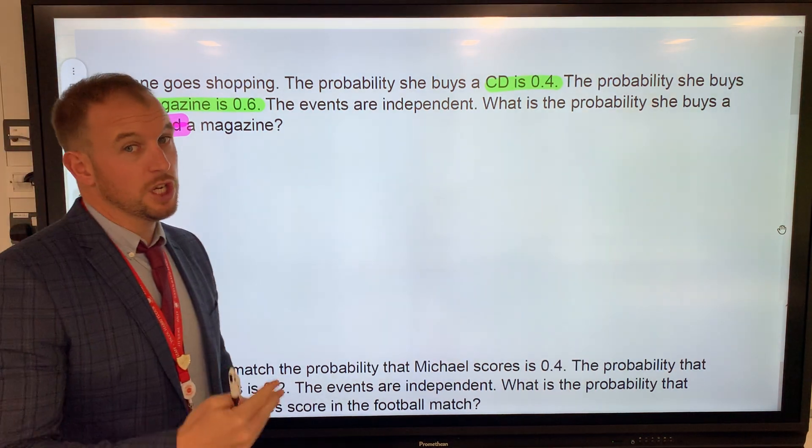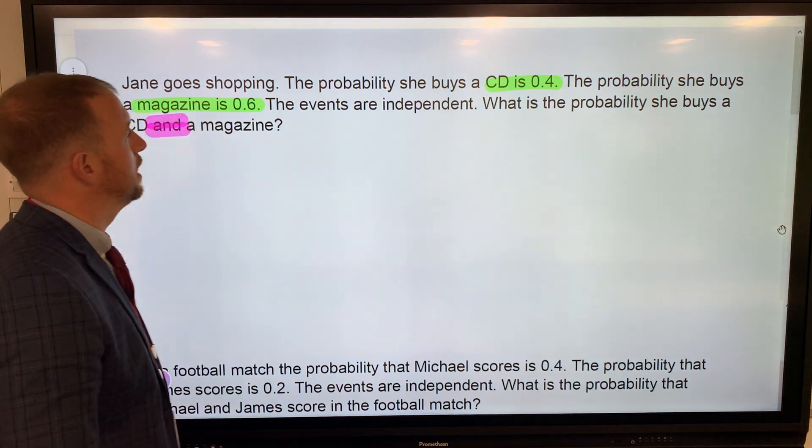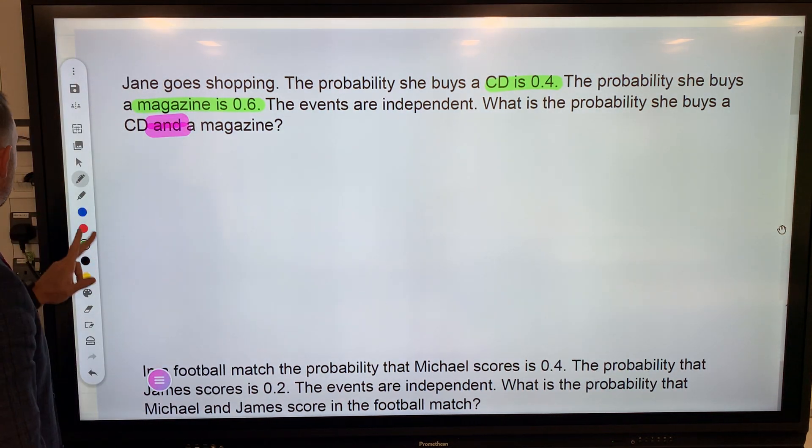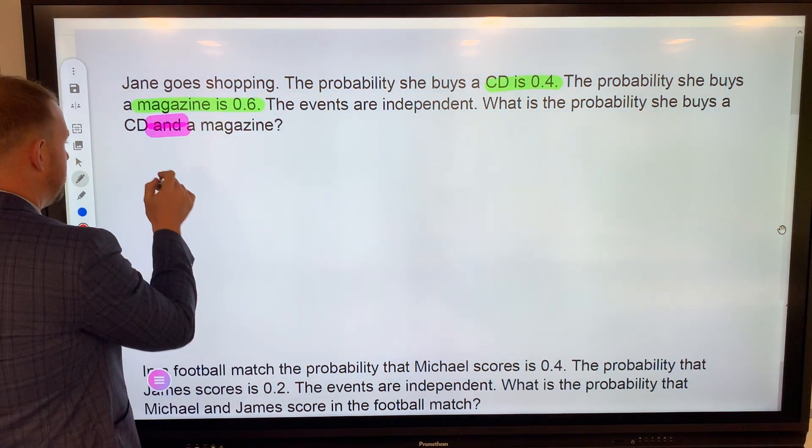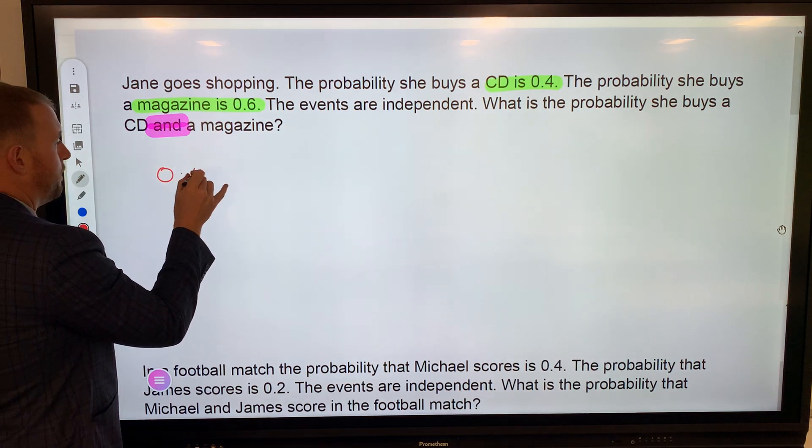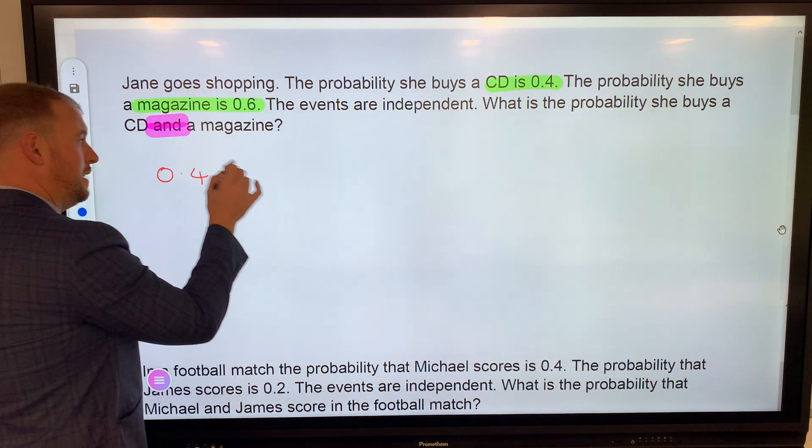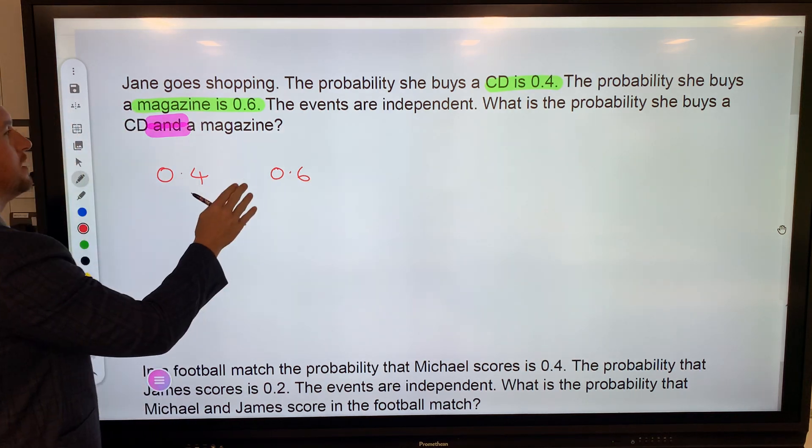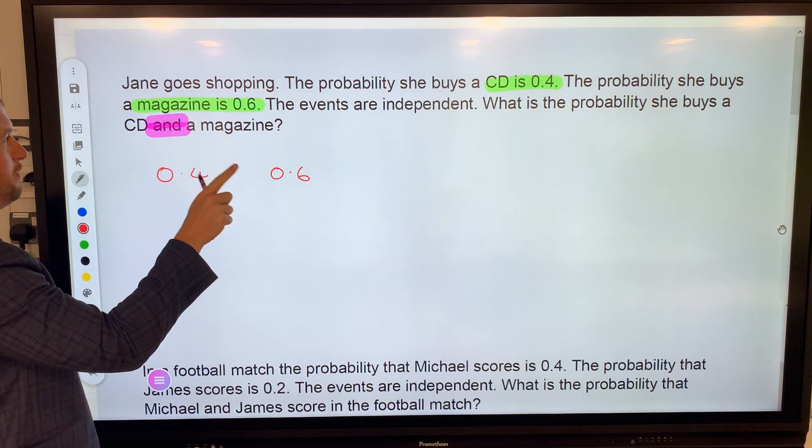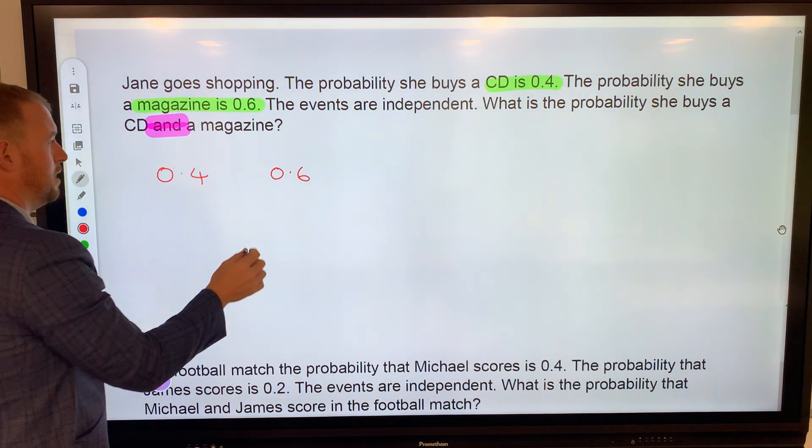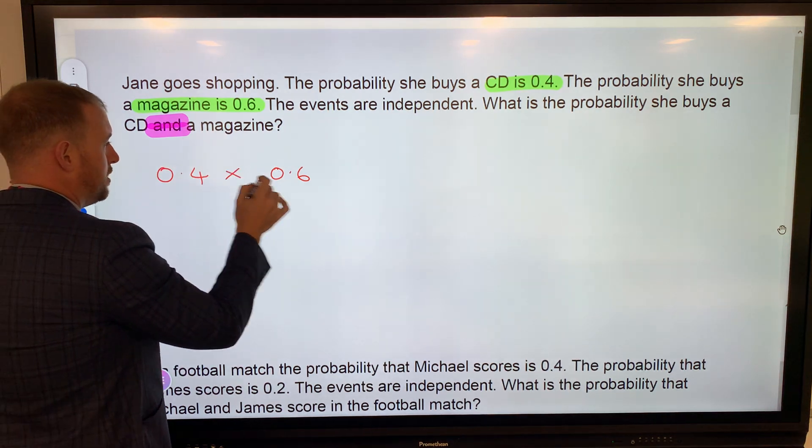The key word in that last sentence is 'and'—that's going to give us a clue of which operation we're going to be using. Probability of buying a CD is 0.4, probability of buying a magazine is 0.6. Completely separate events. The probability she buys a CD and a magazine—we have to multiply them together.